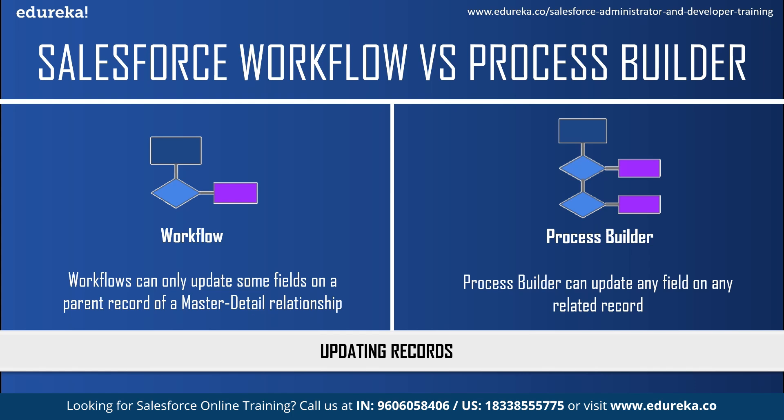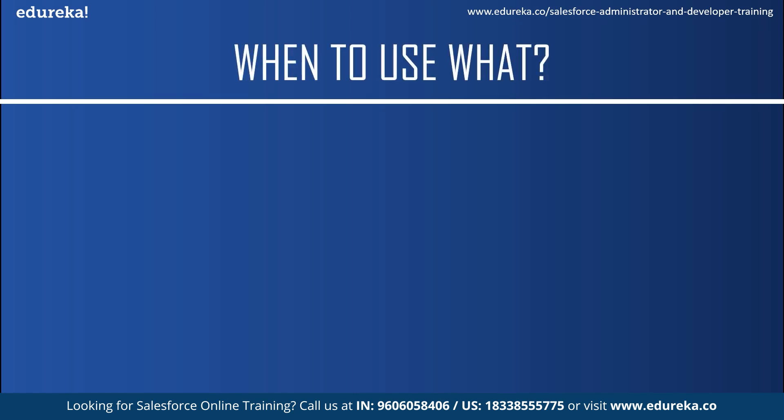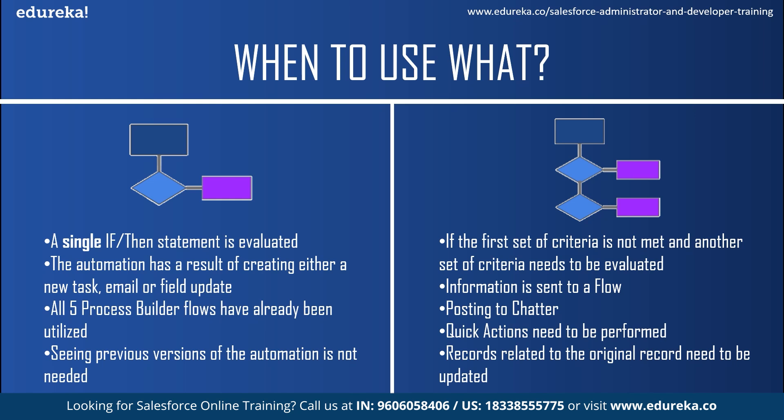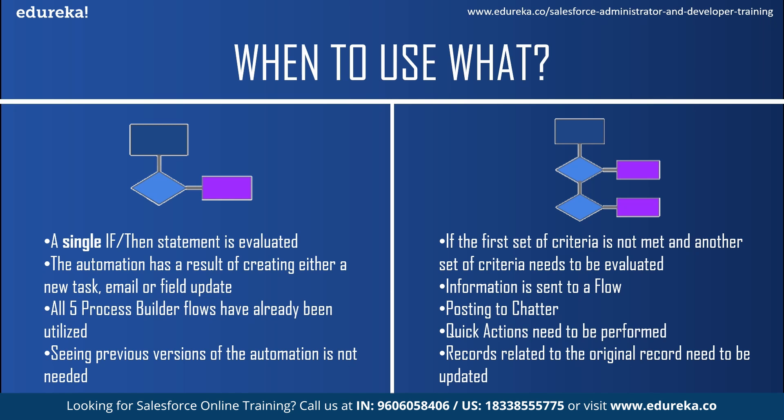Now let's understand when to use workflow and when to use process builder. Use workflow if there is a single if-then statement to be evaluated, or if the automation requires sending an outbound message which is not possible in process builder, or if all five process builder flows have already been utilized. Use process builder if the first set of criteria is not met and another set needs to be evaluated — you can set multiple criteria and actions. Also use process builder if you want to send information to a flow, post to Chatter, perform quick actions, or create records or update records related to the original record.